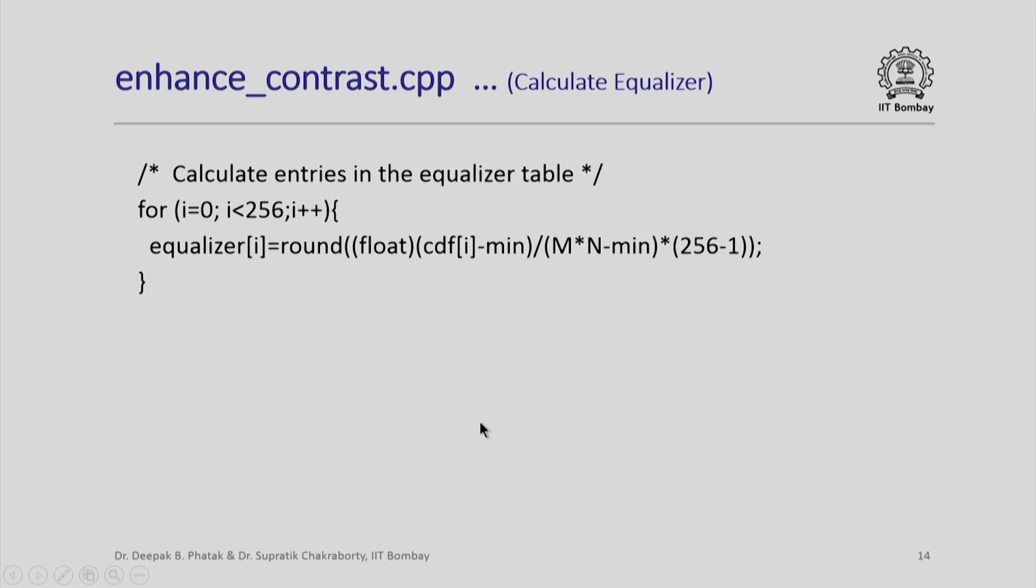Having done this, I am now ready to calculate entries into the equalizer table. Remember the formula: rounded value of (cdf - min) divided by (M × N - min) times (256 - 1). Please note that I convert this value into float to ensure that I get a floating point number which then is rounded off and this rounded value is assigned to the equalizer table.